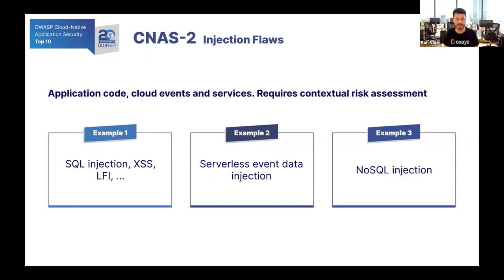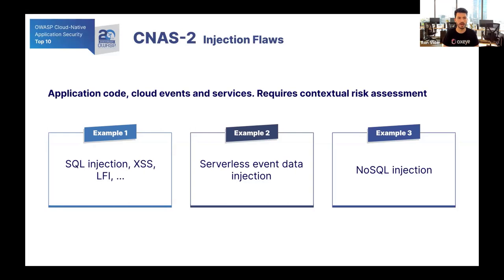Our second risk is injection flaws. I think this is one of the most interesting risks to talk about. Injection flaws are not something new, but the shift to cloud native brings a huge change. When talking about injection flaws, it is important to notice that an injection flaw stretches across multiple microservices and multiple infrastructure layers. For example, we cannot just look at the custom code without knowing where it is deployed in the environment. Does it receive input directly from the user or through an internal component — maybe another service or a third-party service? Knowing that can actually increase or even decrease the score for the vulnerability. Determining the potential risk of injection flaws is much more complicated than ever.